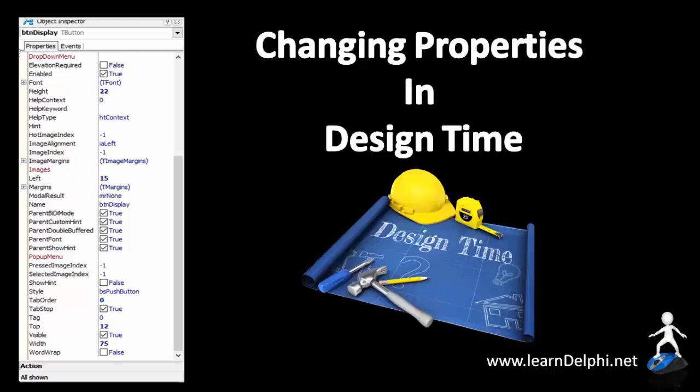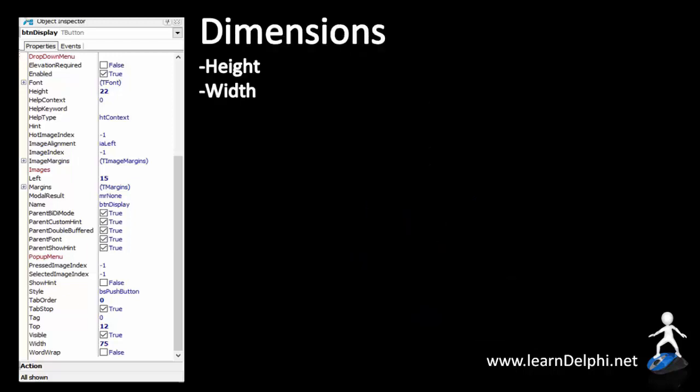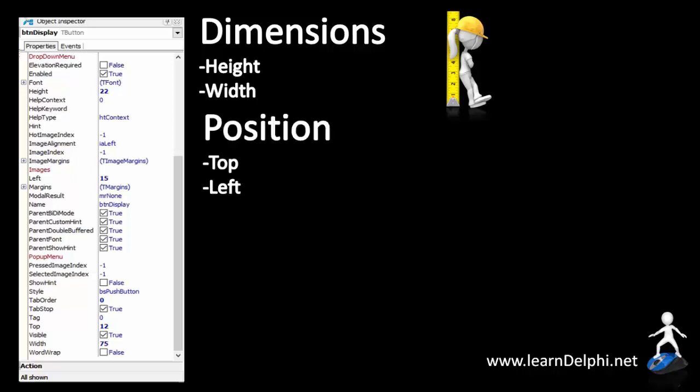Some of the properties that you can change in the Object Inspector are the dimensions of an object, that is the size. The height and the width properties are examples of dimensional properties. Then we also have some properties that can be used to position an object on a form or in a panel. Examples of positional properties are top and left.